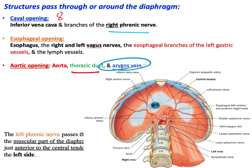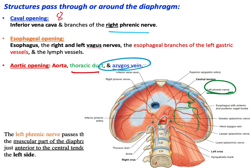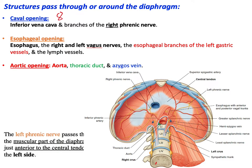Returning to the caval opening: the inferior vena cava and right phrenic nerve pass through it. The left phrenic nerve, however, passes through the muscular part of the diaphragm just anterior to the left part of the central tendon. So the left phrenic nerve pierces the muscular part rather than passing through one of the three named openings.